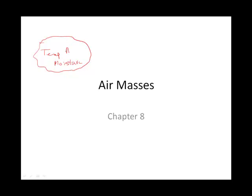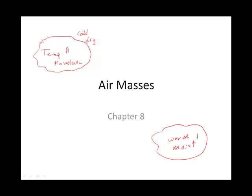That's air mass A, and in the northern hemisphere, that could be kind of cold and dry. We'll talk about that type of air mass. And then in the northern hemisphere, we might have something warm and moist — a different air mass — and we'll call that air mass B.